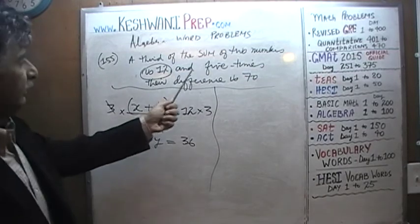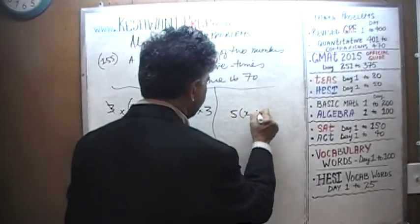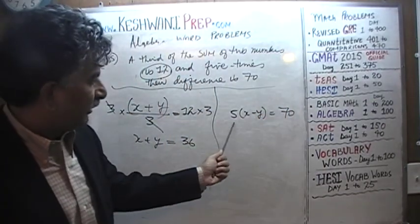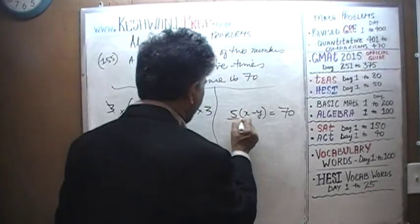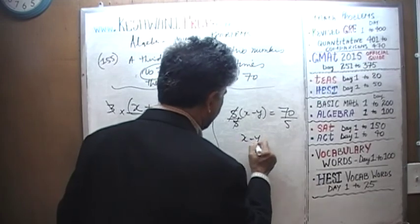They go on to tell us that 5 times their difference is 70. So if you take 5 times their difference, it's 70. We're not interested in 5 times their difference, we want to find out their difference. So divide both sides by 5. 5 is going to drop out and X minus Y equals 70 divided by 5.